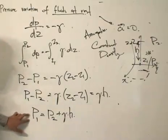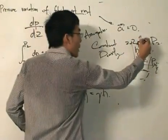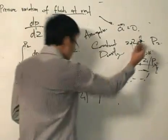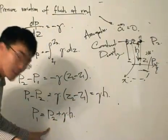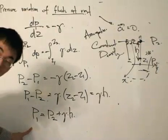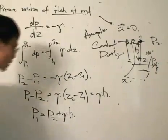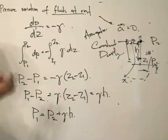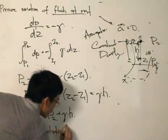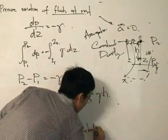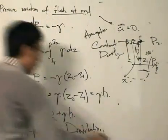Rearranging, p1 = p2 + γh. This equation tells us that as we move deeper into the liquid, the pressure increases — which we expected. The pressure at p1 equals the pressure at p2 plus the specific weight times the height. This is called a hydrostatic pressure distribution, meaning pressure varies linearly with depth.